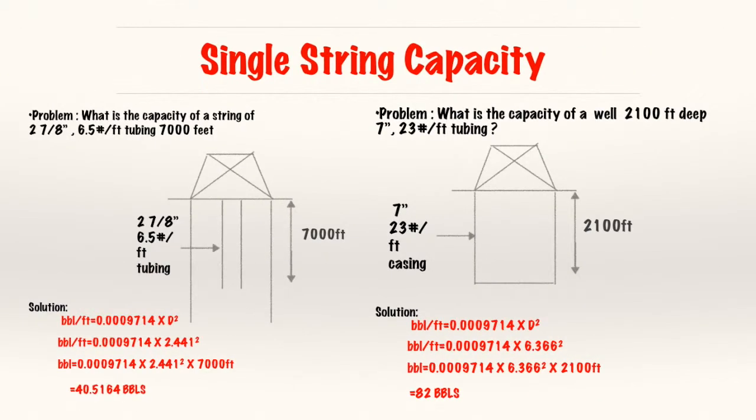So let's start with single string capacity. So what is the capacity of a string? 2 7/8 inches, 6.5 pound per foot tubing, and 7,000 feet long. So we understand that, we understand what this means inches and this means pounds because we discussed that in the area video. So this is your tubing, this is my made up diagram. This is my wellhead, this is my tubing right here. So I have 2 7/8 inches, 6.5 pound per foot tubing, and with a height of 7,000, and I just take my barrel per foot factor expressed at 0.0009714 times D squared. I plug in my number, remember inner diameter, 2 7/8 will be 2.875, so you need to get the inner diameter of the tubing in order to calculate its capacity. You square that, multiply it by the height, and you get your answer in barrels.